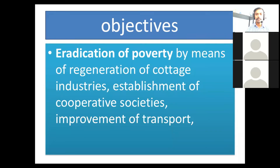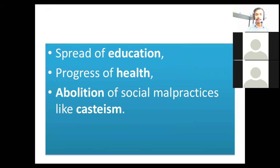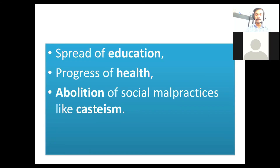Then, objectives. Eradication of poverty by means of reconstruction of cottage industries, establishment of cooperative societies, and improvement of transportation. Second objective: spread of education — free and higher education. Next, progress of health — physical health, mental health, and social well-being. Then, abolition of social malpractices like casteism and untouchability.